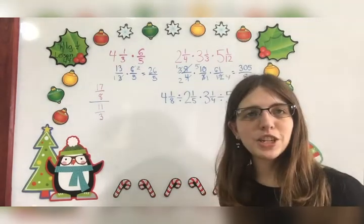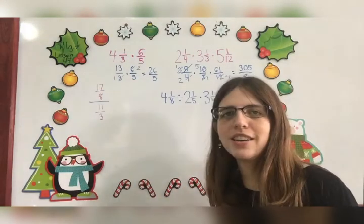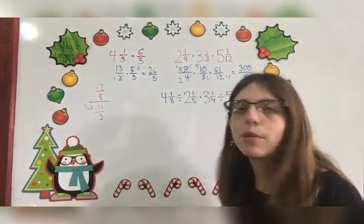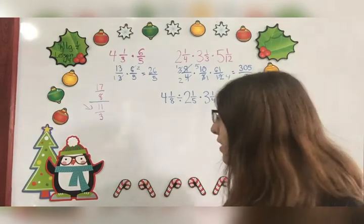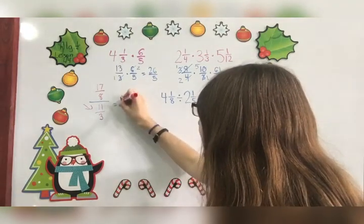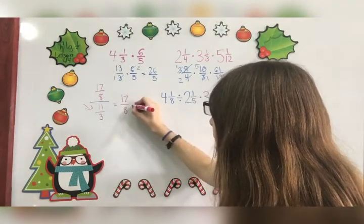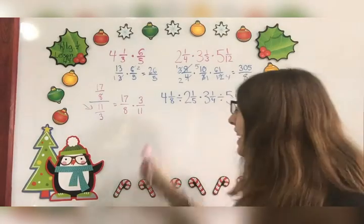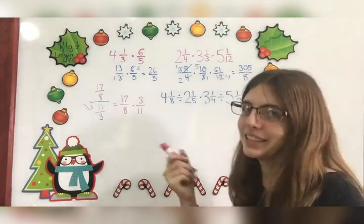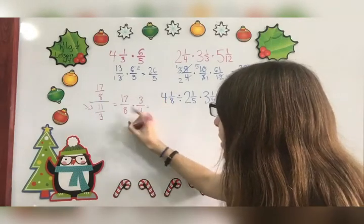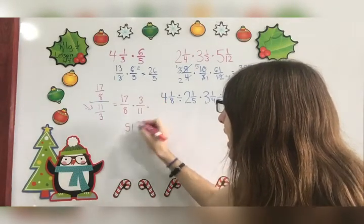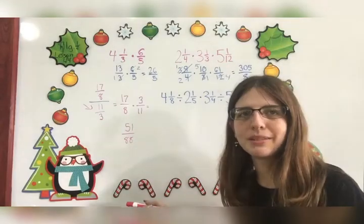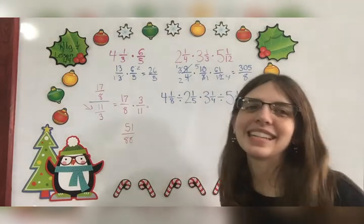Now according to my division rule, I need to flip my fraction and multiply. Well, which fraction do you flip? You flip the second one, the bottom one, your divisor, what you're dividing by. So this becomes 17/8 times 3/11. Anything to cancel? Sadly, no. So I just have to multiply. 17 times 3 is 51, 8 times 11 is 88. Check if it can be reduced. Nope, so this is our final answer.